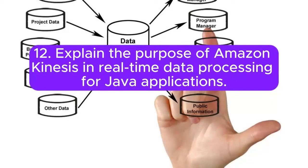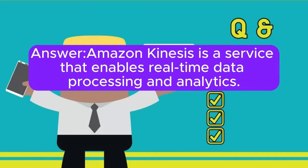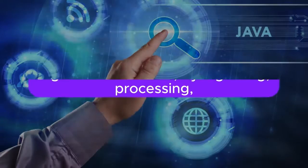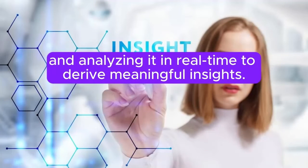Question 12: Explain the purpose of Amazon Kinesis in real-time data processing for Java applications. Amazon Kinesis is a service that enables real-time data processing and analytics. Java developers leverage Kinesis for handling streaming data, such as logs or clickstreams, by ingesting, processing, and analyzing it in real-time to derive meaningful insights.